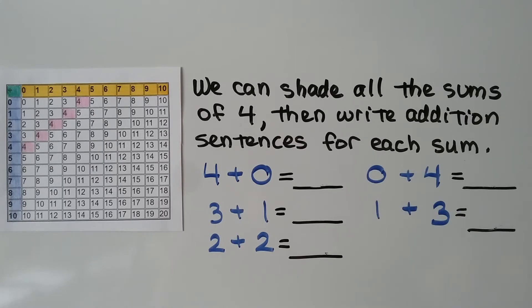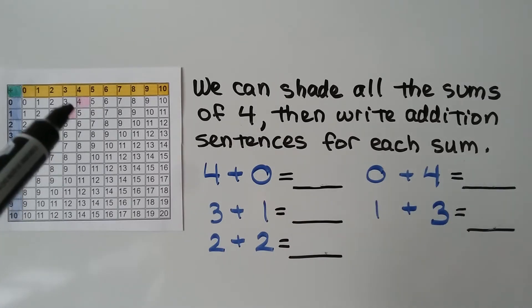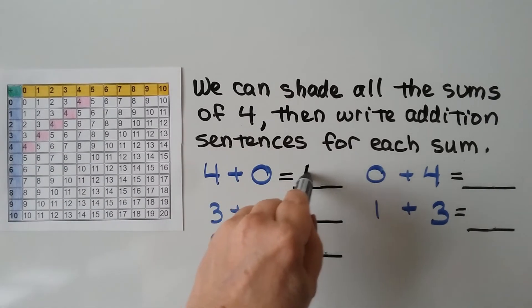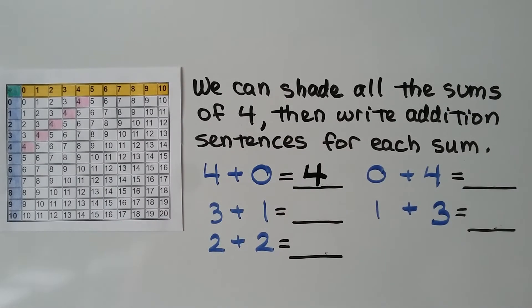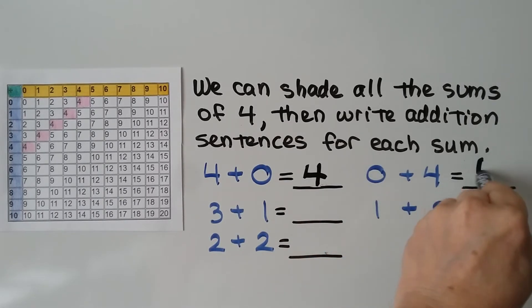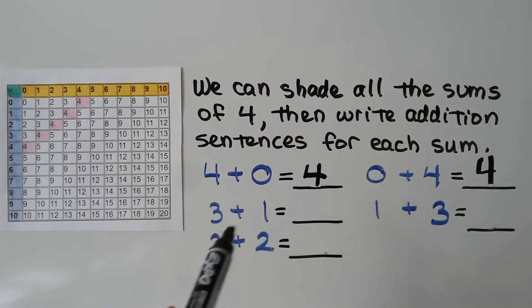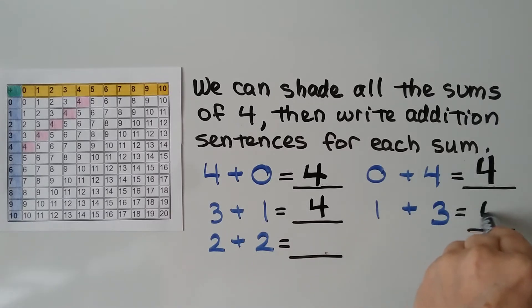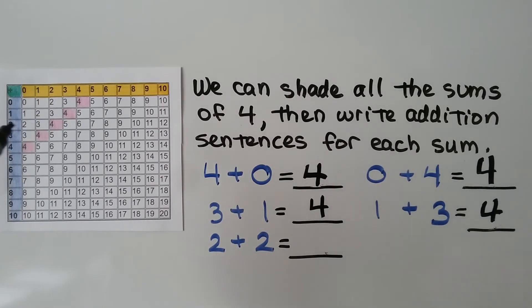We can shade all the sums of 4 and write addition sentences for each sum. We have 4 plus 0 — our addition table tells us it equals 4, and because we're adding 0 to it, the identity property says it stays 4. Now we have 0 plus 4 — that's the commutative property, so they're both 4. We have 3 plus 1 equal to 4, and 1 plus 3 equal to 4 because of the commutative property. Then we have 2 plus 2, which is 4.